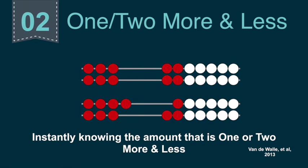The next relationship — one/two more or less — is instantly knowing what is one and two more and less of any amount. Having a visual picture helps with that. If we have a visual of a rekenrek showing six and then ask what's one more, the visual of seven may come up for them. This idea extends into multi-digit numbers too: one ten and two tens more, so 10 or 20 more or less, or what's 100 or 200 more and less.